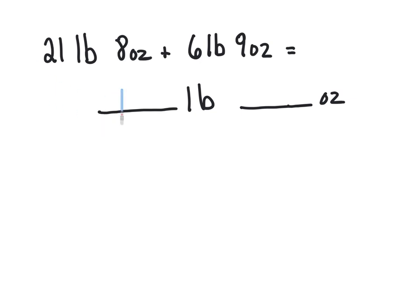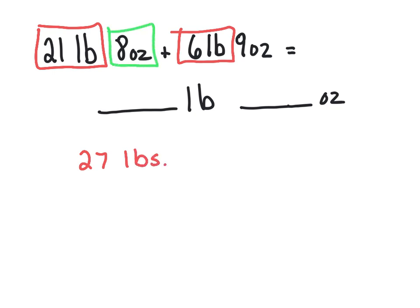And so, which is great, we can actually just, because we're dealing with addition, we can just match up the ones. We can add 21 pounds plus 6 pounds and we're going to get 27 pounds. And then on the other end here we get 8 ounces and we can match that up with the 9 ounces to get 17 ounces.